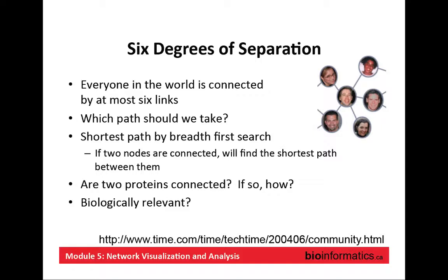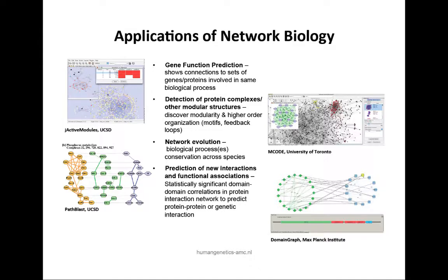If you had a giant biological network and wanted to know how two proteins are connected, you could apply that algorithm and find that path. But is that biologically relevant? It's a solution from computer science, but the shortest path may not consider important aspects of biology. We do have to be careful when moving algorithms from computer science to biology. Whenever you use network analysis enough, you can identify these core algorithms that are used over and over again and be aware of what's missing.